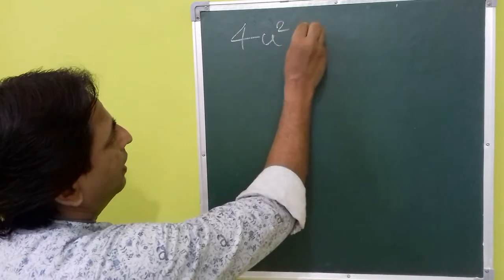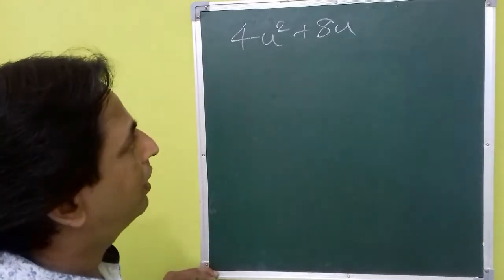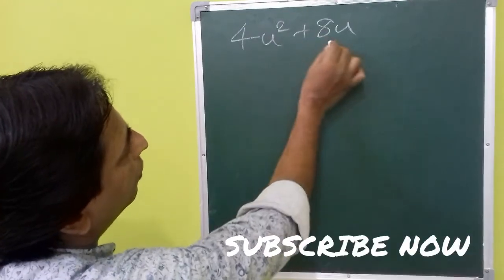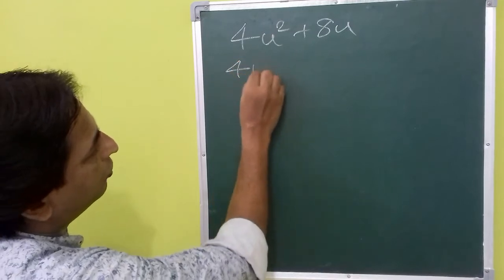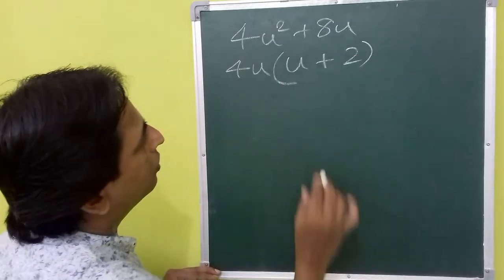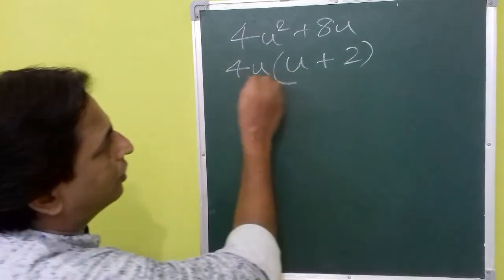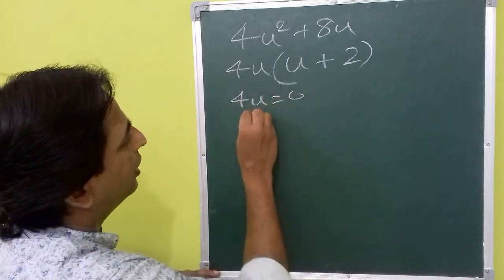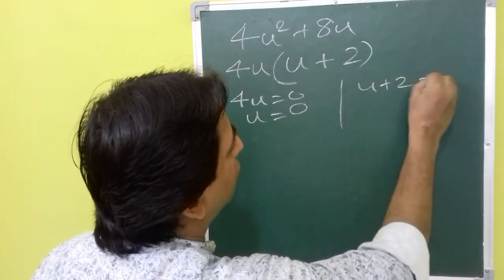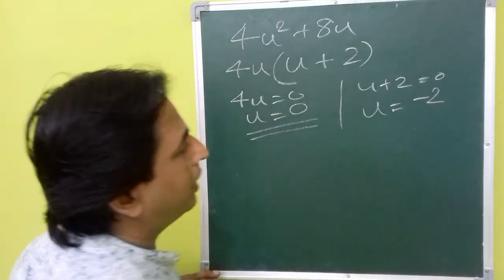Another example is 4u squared plus 8u. Here there is no constant term, so we cannot use splitting the middle term. Instead, we notice both terms share a common factor of 4u. Factoring out 4u gives 4u times u plus 2. The polynomial becomes 0 when 4u equals 0, giving u equals 0, or when u plus 2 equals 0, giving u equals minus 2. So the zeros of the polynomial are 0 and minus 2.